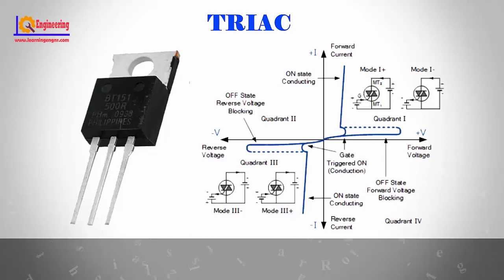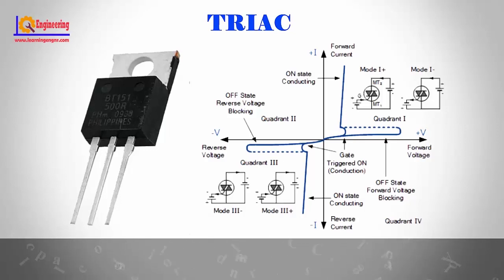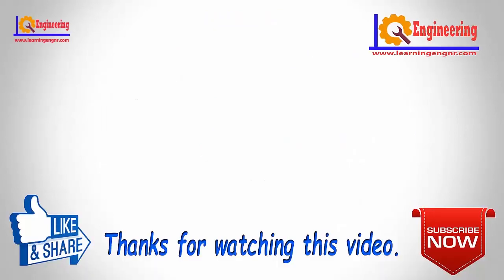TRIAC can be used for both AC and DC sources, but it is generally used in AC applications like motor control and light switching. Thanks for watching. For more updates, please subscribe to our channel Learning Engineering and press the bell icon for notifications.